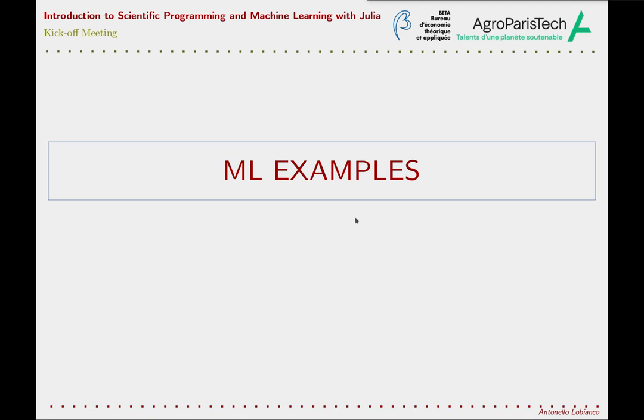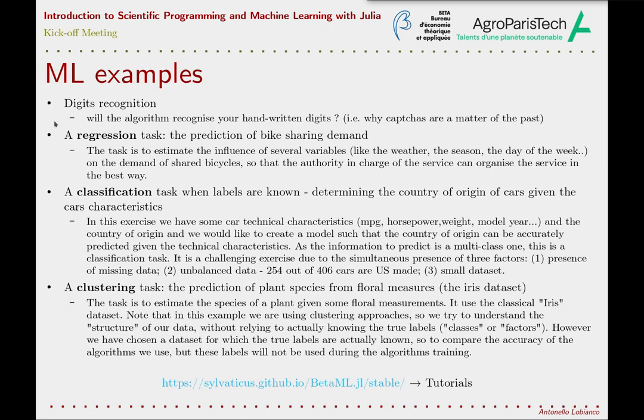To complete this first introductory lesson, I propose some examples of machine learning tasks. The first example is what has become a classical example of digit recognition from handwritten images. We have a large database of handwritten digits, available as images with the associated number pictured on each image. This is the famous MNIST handwritten digit database, and we use it to train our machine learning algorithm.